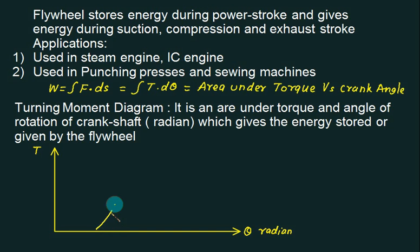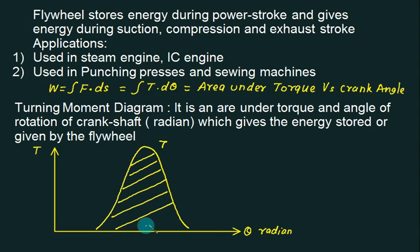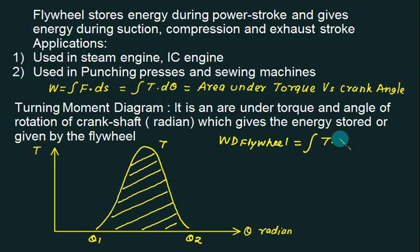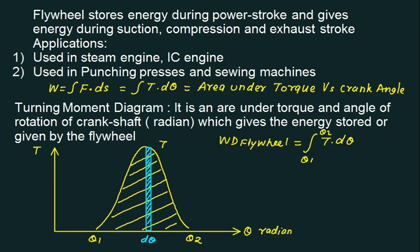For a general turning moment diagram, we have a variation of torque T plotted here. The area under this diagram is called the work done. The work done by the flywheel from angle θ₁ to θ₂ can be obtained from ∫T·dθ. This indicates we take a very small strip of height T and width dθ — a small rectangle. By adding all such strips through integration, we can calculate the total area under the T-θ diagram.